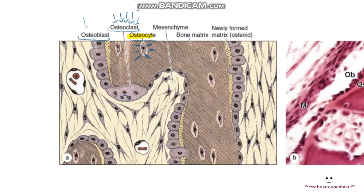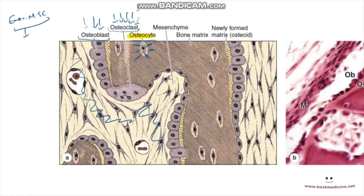The focus of this video is the osteoblast. These are simple cuboidal cells present in a simple cuboidal layer of the periosteum and endosteum. They are derived from osteoprogenitor cells, which are derived from mesenchymal stem cells — either directly from embryonic mesenchyme or mesenchymal stem cells inside the fibroblast layer just outside the periosteum.